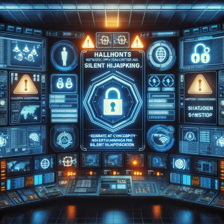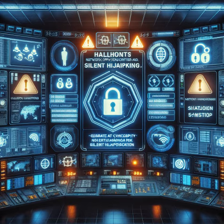Preventative measures against silent hijacking involve a combination of proactive strategies and robust security practices. These include regularly updating software to patch vulnerabilities, using complex and unique passwords, enabling multi-factor authentication for an added layer of security, and employing endpoint protection solutions to detect and block malicious activities.